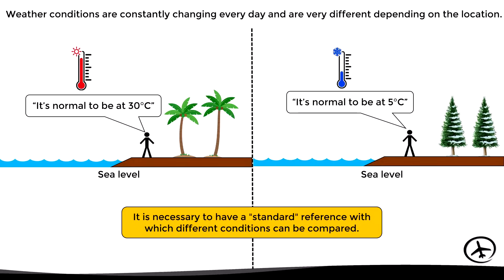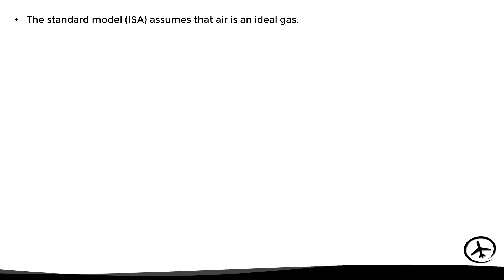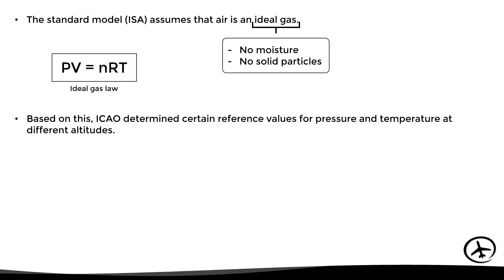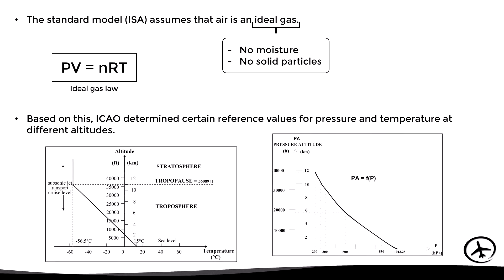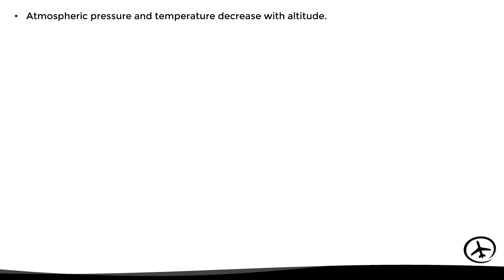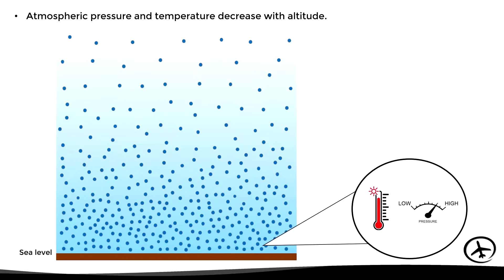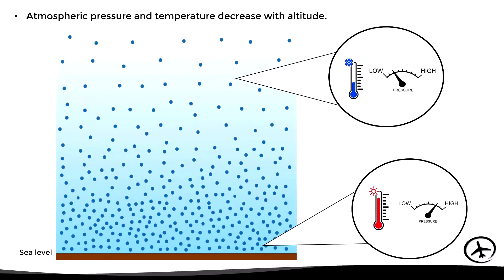With this in mind, let's look at the principles and characteristics of the ISA model. This model assumes that air behaves as an ideal gas, so it is assumed to be free of moisture and suspended solid particles such as dust or sand. Obviously this is not the case in practice, but these assumptions help in the development of the model. So based on this, the ICAO determines certain reference values for air pressure and temperature at different altitudes. However, in general terms, pressure and temperature decrease with increasing altitude. In other words, at sea level we will find a higher pressure and temperature than at higher altitudes.